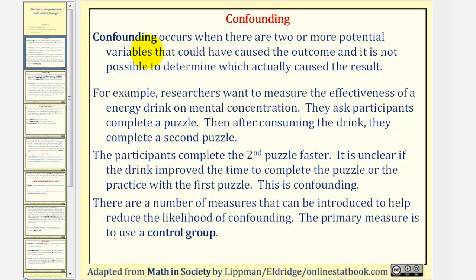For review from our previous lesson, confounding occurs when there are two or more potential variables that could have caused the outcome, and it is not possible to determine which actually caused the result. For example, researchers want to measure the effectiveness of an energy drink on mental concentration. They ask participants to complete a puzzle, then after consuming the drink, they complete a second puzzle. The participants complete the second puzzle faster. However, it is unclear if the drink improved the time to complete the puzzle, or they practiced with the first puzzle. So because the variable causing the outcome cannot be specifically determined, this is confounding.